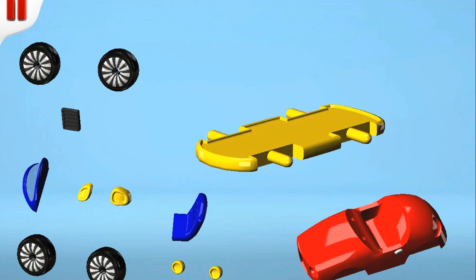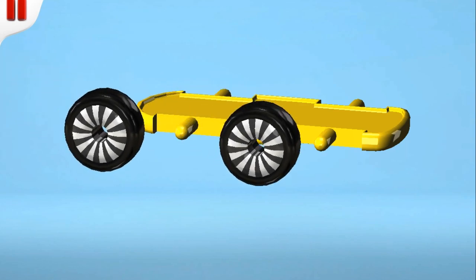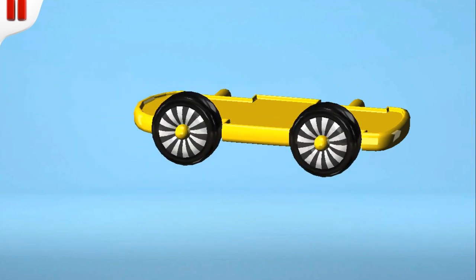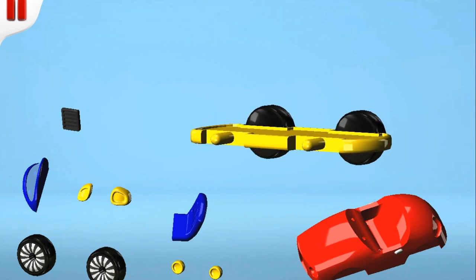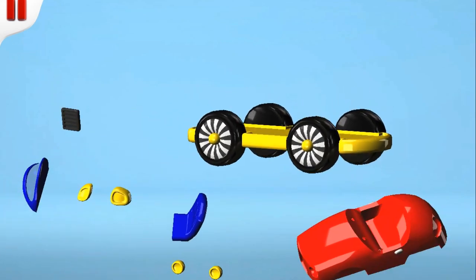Here is its yellow chassis. First we'll fix wheels onto it. Two on one side and two on the other.